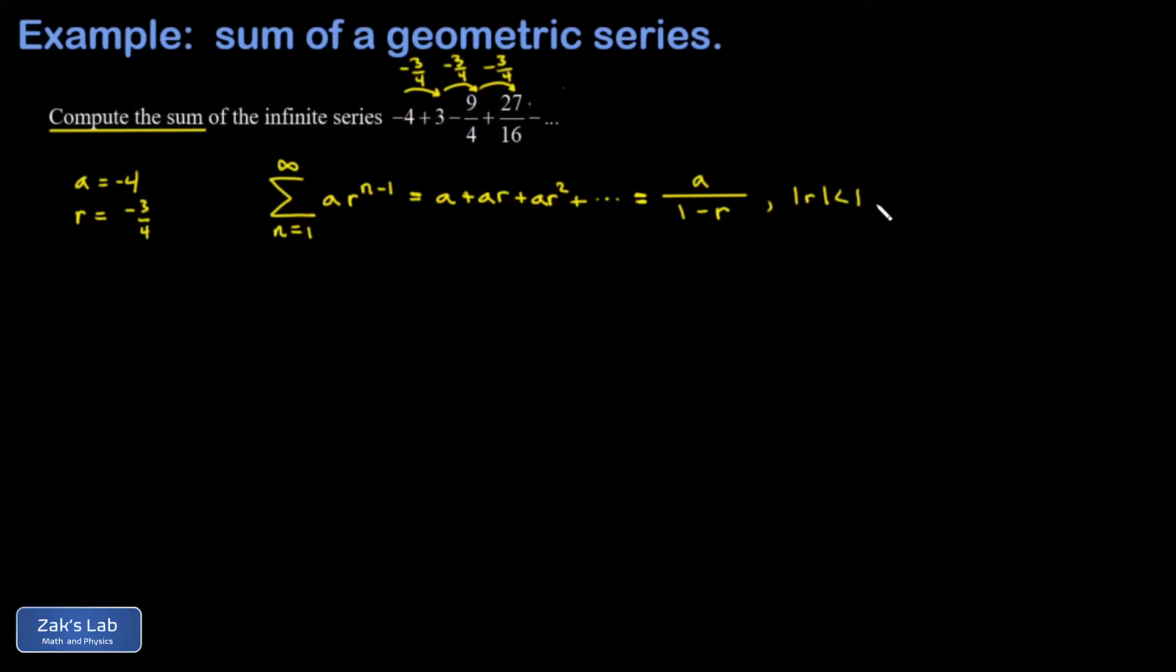So for the particular problem we're looking at, we have to check: is the absolute value of r less than 1? And it is, because the absolute value of negative 3 fourths is just 3 fourths.